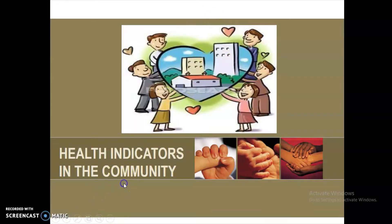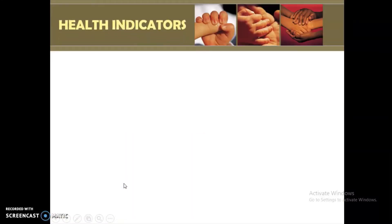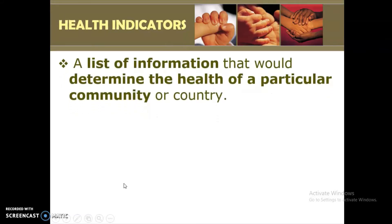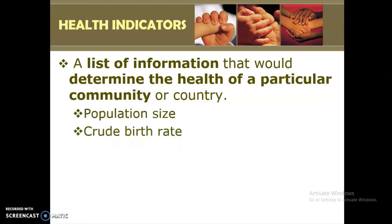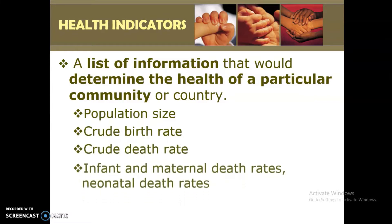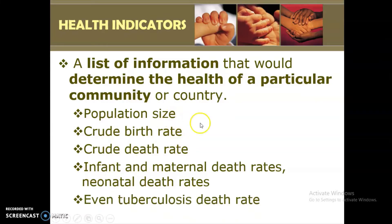Let us define first what is a health indicator. According to the book of Maglaya, a health indicator is a list of information that would determine the health of a particular community or country. When we talk about health indicator, this includes your population size, your crude birth rate, death rate, infant and maternal death rates, neonatal death rates, and even your tuberculosis death rate.